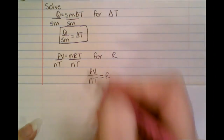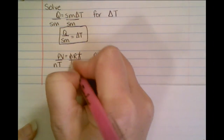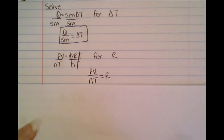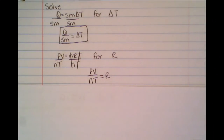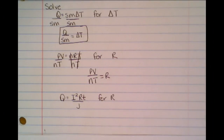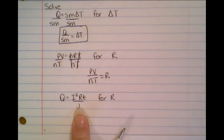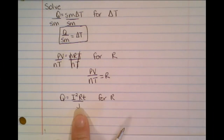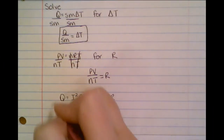Now remember, if it's easier for you to mark out as you go, please do that. And our final example, it's pretty nasty looking. But again, we want to get R all by itself. Well, we've got this denominator, so it's divided. So if we want to get rid of the denominator, what's the first thing we need to do?